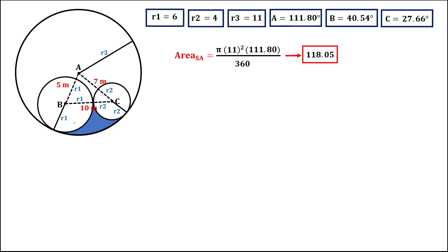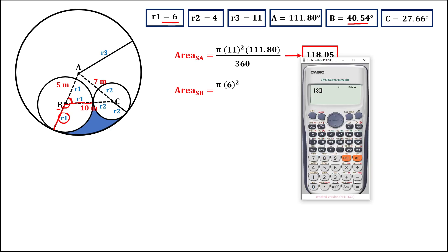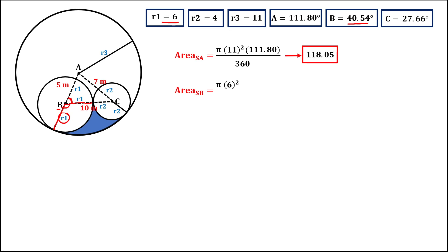Next, we find the area of sector B. The formula is pi times R1 squared times the angle over 360, where R1 equals 6. Since angle B is 40.54 degrees, the sector angle is 180 minus 40.54 equals 139.46 degrees. The area of sector B equals 43.81.